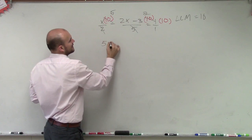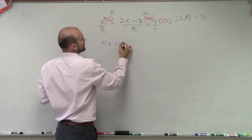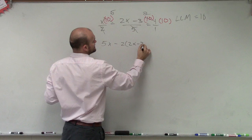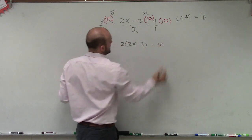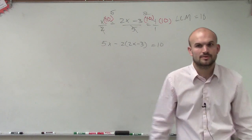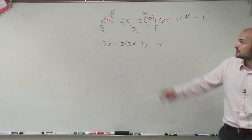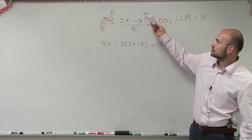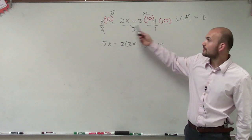So now I have 5x minus 2 times 2x minus 3 equals 10. Do you see how I went from that step to that step? Any questions? Because notice, 10 divided by 5 is 2, so it's 2 times this form. But remember, it's still negative.